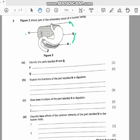What is P? P is the esophagus. Then the part Q is the stomach. Let's just say the stomach. Then B, explain the functions of the part labeled R in digestion.